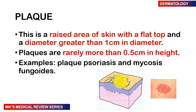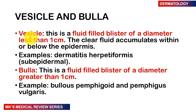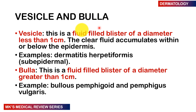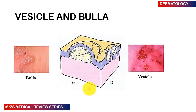Vesicles and bullae are fluid-filled blisters. A vesicle has a diameter less than one centimeter; a bulla has a diameter greater than one centimeter. Clear fluid accumulates within or below the epidermis. If within the epidermis, it's called an intraepidermal blister; if below, a subepidermal blister — as seen in dermatitis herpetiformis. Bullae are seen in pemphigus vulgaris and bullous pemphigoid. Here's an example of what a bulla looks like — quite large compared to the much smaller vesicles.